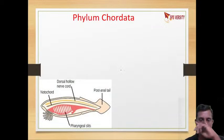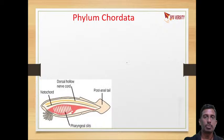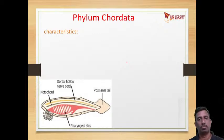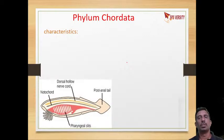So far we have studied the non-chordates. The phyla of non-chordates are: Porifera, Coelenterata, Ctenophora, Platyhelminthes, Nematyhelminthes, Annelida, Arthropoda, Mollusca, and Echinodermata.